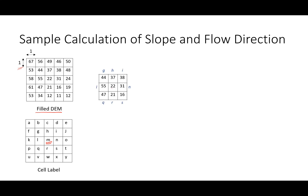Cell M has an elevation of 22 and it is surrounded by eight cells. We are interested in finding the steepest downslope for M. You can see some neighbors are higher than 22, so water will not flow there. Water can either flow to S or to R, and that is dependent on which one has the steepest slope.